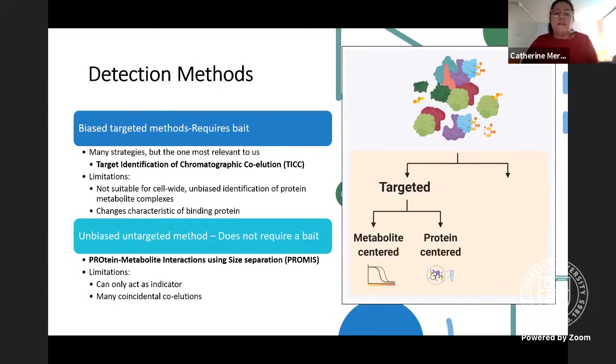The limitations, of course, are having to have a bait, which means you either need to know the protein or metabolite that you want to work with. Therefore, they're not suitable for cell-wide unbiased identification of protein-metabolite complexes. Additionally, as interactions take place with binding, you risk altering the confirmation and characteristics of the protein.